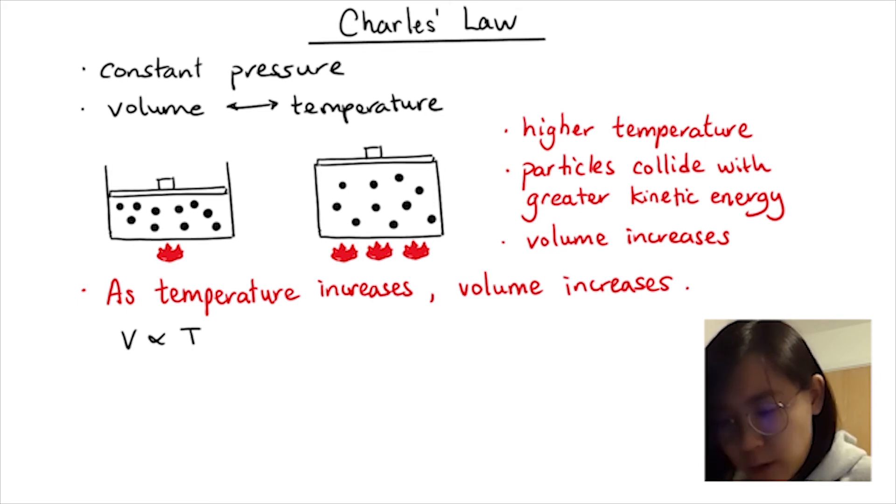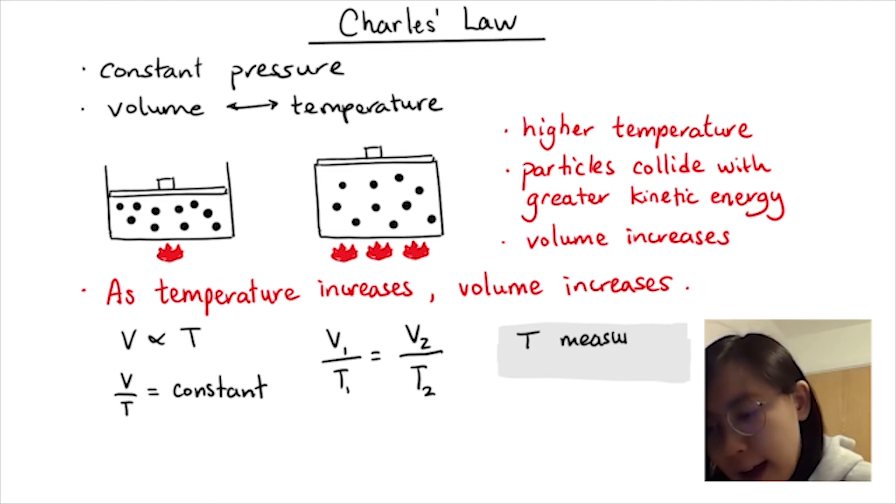They are proportional. Bringing T to the left-hand side by dividing, I get a constant. So Charles' Law says that the ratio of volume and temperature is constant. V1 over T1 equals V2 over T2. And just a quick reminder that temperature needs to be in Kelvin and not degrees Celsius.